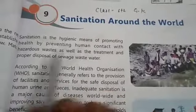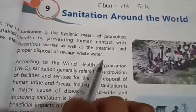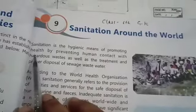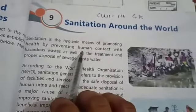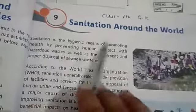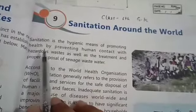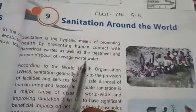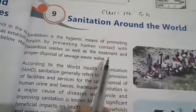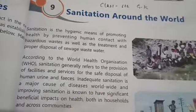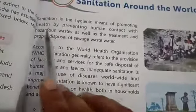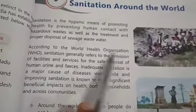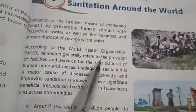Sanitation also involves the treatment and proper disposal of sewage and wastewater. In sanitation, people are told about the dangerous effects of sewage wastewater, and how to use treatment and proper disposal methods for sewage wastewater. According to the World Health Organization (WHO), sanitation generally refers to the provision of facilities and services for the safe disposal of human urine and feces.